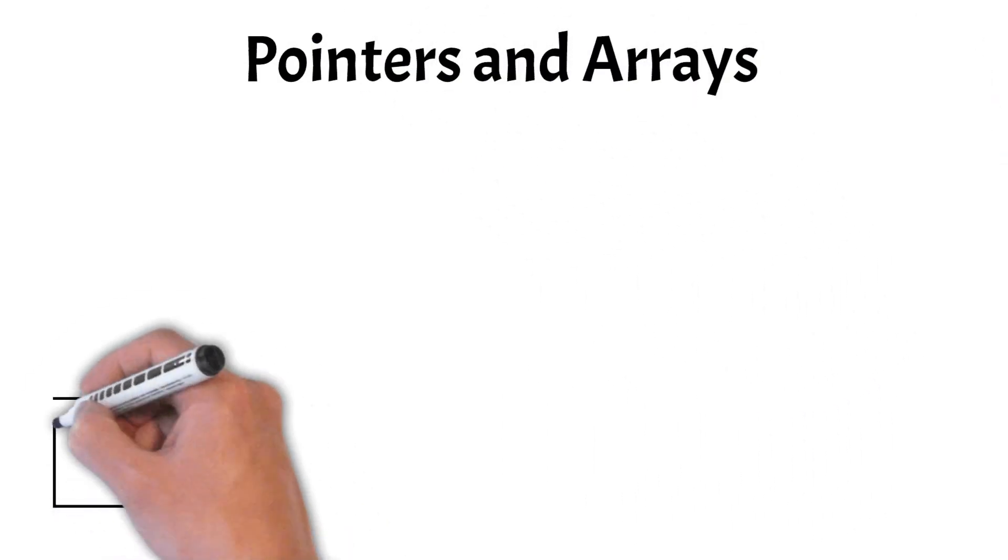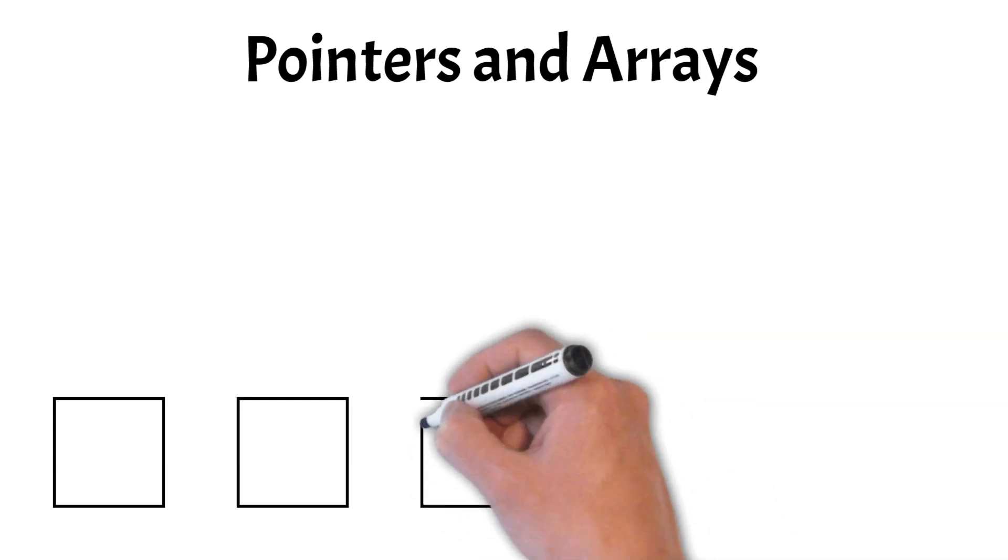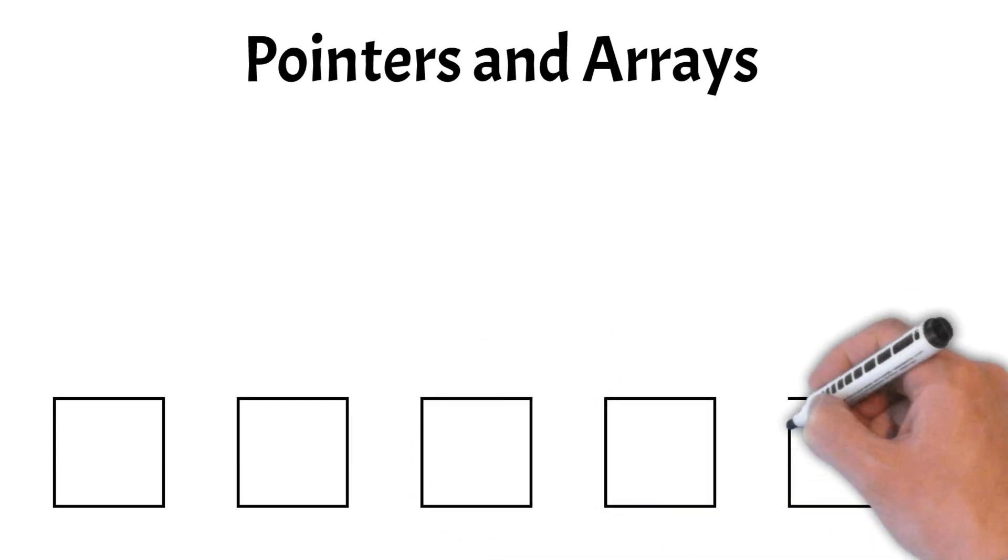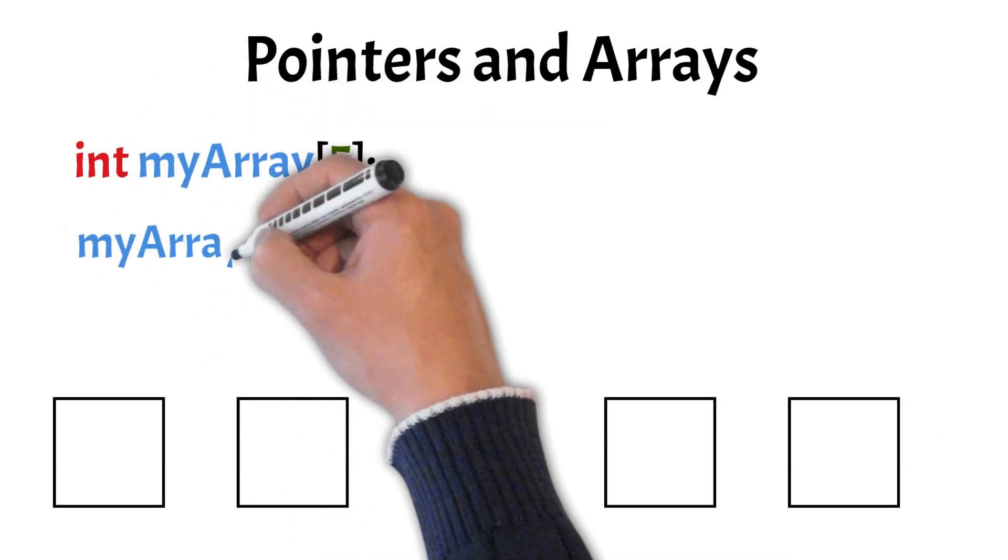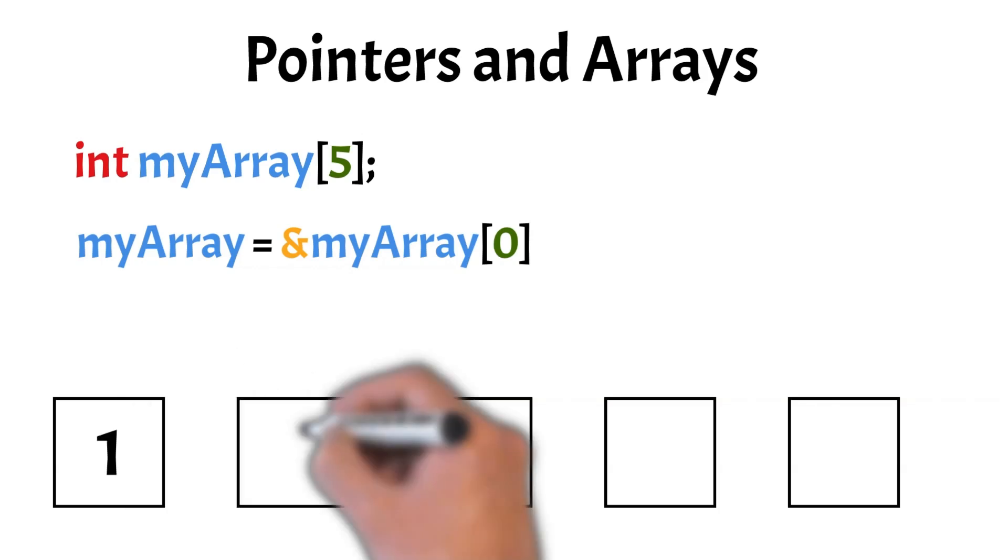Now let's talk about pointers and arrays. Pointers and arrays are closely related in programming, especially in languages like C and C++. An array is essentially a contiguous block of memory where each element is of the same type, and a pointer can be used to navigate through this block efficiently. When you declare an array, the array name itself acts as a pointer to the first element.